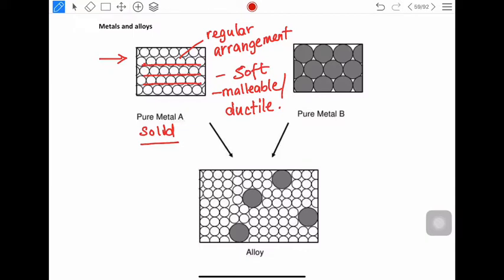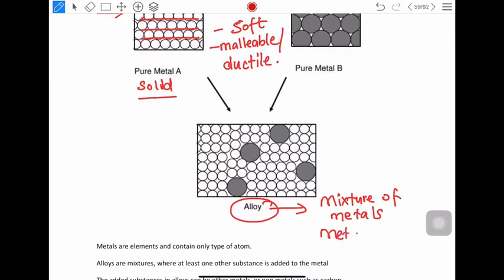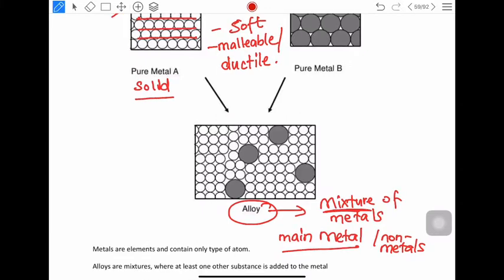Now when metals are mixed together, you have the formation of an alloy. An alloy is a mixture of metals, or you could have a mixture of a main metal and non-metals in it. So you have a small amount of non-metals and a main metal, or you could have a mixture of several metals and non-metals together.